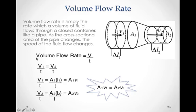So our first idea is an idea of volume flow rate, and it's simply the rate at which a volume of fluid flows through a closed container like a pipe. And the cross-sectional area of the pipe change - if the cross-sectional area of the pipe changes here, we're going to see how the speeds are going to change to compensate for that change in area. So volume flow rate is simply the volume, how much of the liquid or fluid goes by in a certain amount of time. That's what the volume flow rate is.